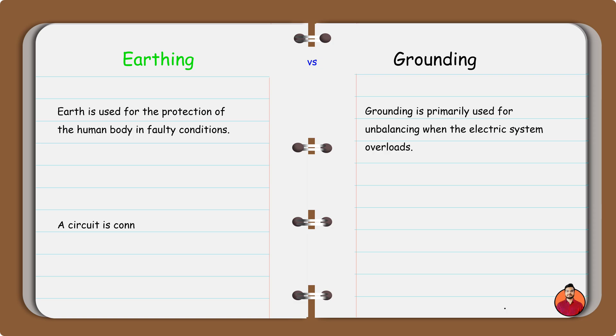In earthing, the circuit is connected to the earth as the earth is an equipotential surface. In grounding, a circuit is not physically connected to the earth but the potential is zero with respect to the other points.